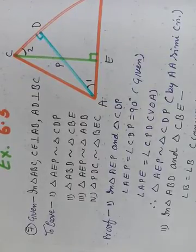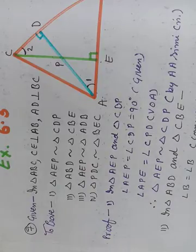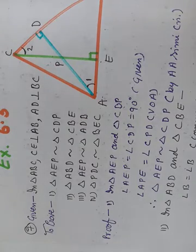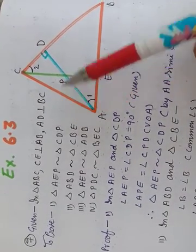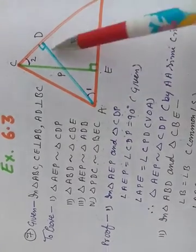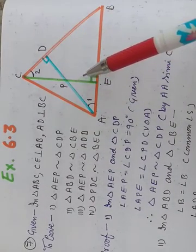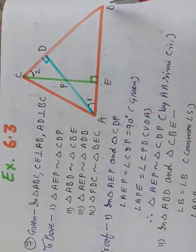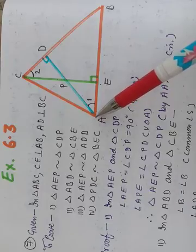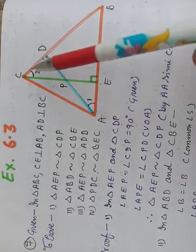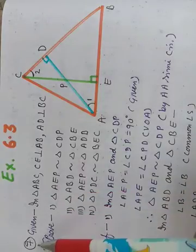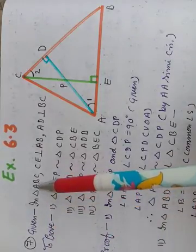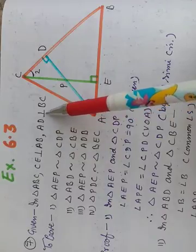Yesterday I told you that I will explain question number seven. Questions five, six, and eight I already explained, and now it is the time for question number seven. Exercise 6.3 — one triangle ABC is given. By green color I have drawn perpendicular CE perpendicular to AB, and another perpendicular from the vertex AD is perpendicular to BC. So the given conditions are CE⊥AB and AD⊥BC.